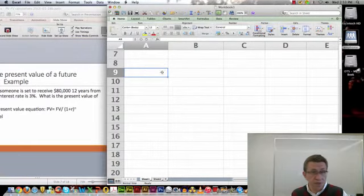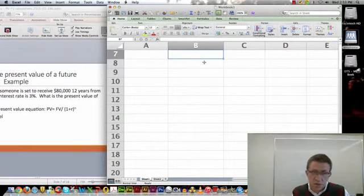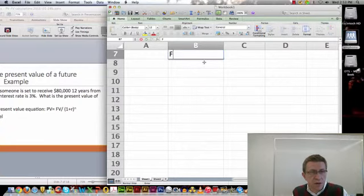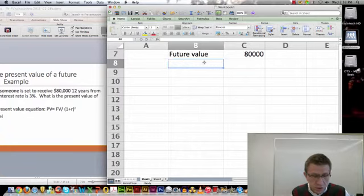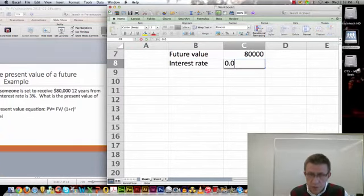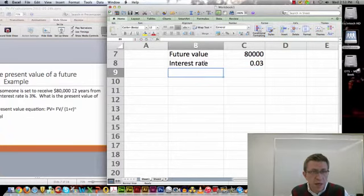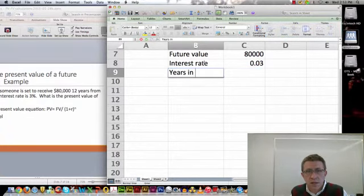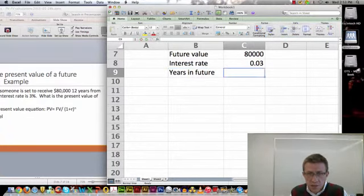Okay, we have Microsoft Excel open. So let's just start defining our variables here. We know that the future value on the money is $80,000. We know that the interest rate is 3%, 0.03. And the years in the future that this is received is 12.